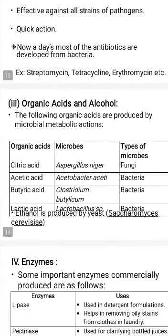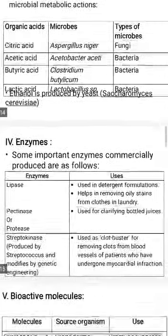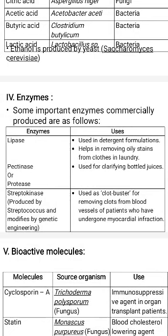Organic acids and alcohols are also produced on an industrial scale from microorganisms. Citric acid is produced from the fungus Aspergillus niger. Acetic acid, present in vinegar used for preservation, is obtained from Acetobacter aceti. Butyric acid is produced from Clostridium butylicum. Lactic acid is produced from Lactobacillus species. Ethanol is also produced from yeast Saccharomyces cerevisiae. Some enzymes are also produced commercially; for example, lipase is of great importance and is used in detergents for removing oily stains or dirt from clothes.